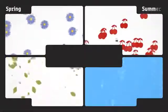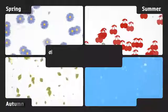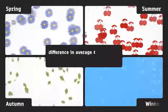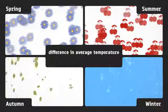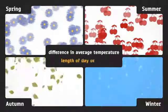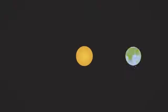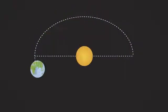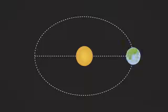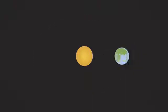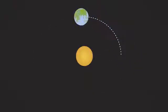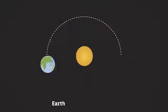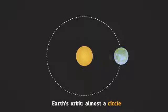Seasons are broadly characterized by the difference in average temperature and the length of day or night. Intuitively, it may seem that the varying distance of Earth from Sun causes seasons, but in fact the maximum difference of this distance is just about three percent.